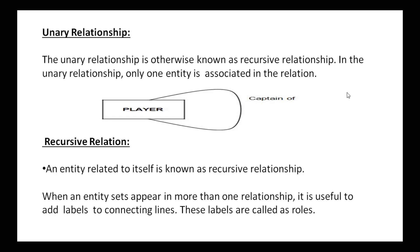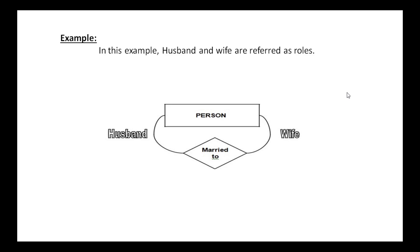When an entity set appears in more than one role in a relationship, it is useful to add labels to the connecting lines. These labels are called roles. Here the player is related to the player entity itself — the role of one player is captain of many players. This is called a unary relationship.